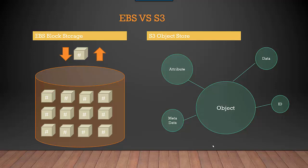Hey everyone, in this video we will talk about the difference between EBS and S3. Elastic Block Store is a block storage and S3 is object storage. With EBS the data gets stored as chunks or blocks.